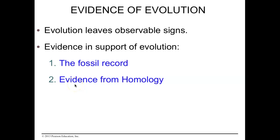What evidence do we have for evolution? This is Roman numeral three in your outlines. It's going to be the fossil record and evidence from homology, because evolution leaves observable signs.